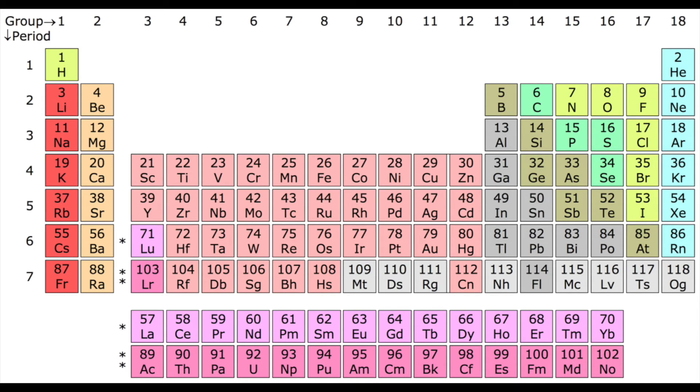Then we also have the transition metals and the transition metals are right in the middle of the periodic table. It goes up in here from group 3 to group 12. So from 3 to 12 all of those are transition metals.